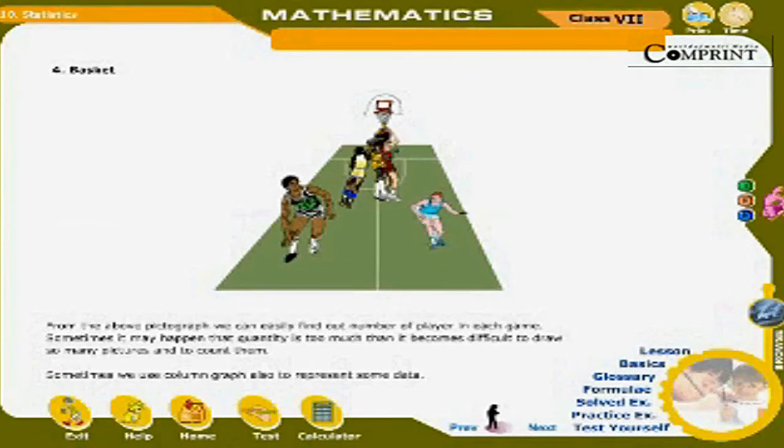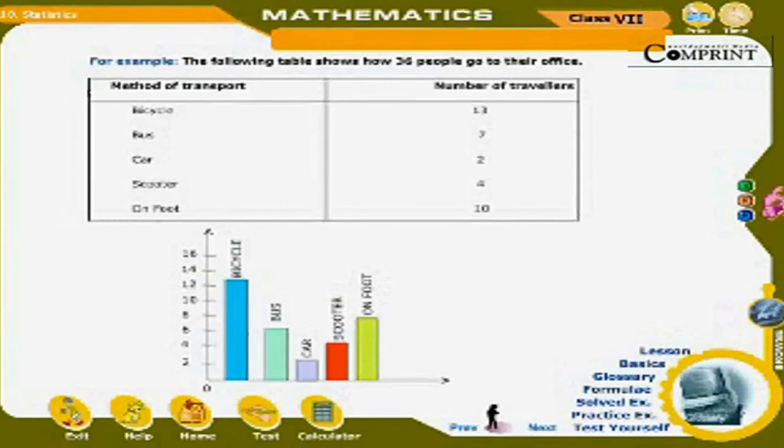Sometimes, we use column graph to represent some data. For example, the following table shows how 36 people get to their office: Method of Transport, Number of Travellers.